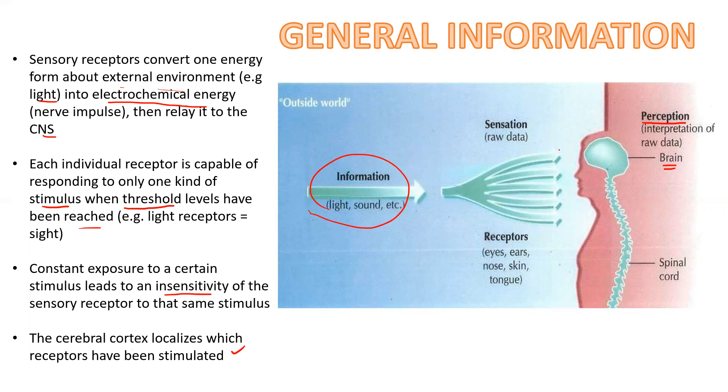The cerebral cortex localizes which receptors have been stimulated. So the thalamus is going to say light, you go here. The occipital cortex, right? That deals with light.